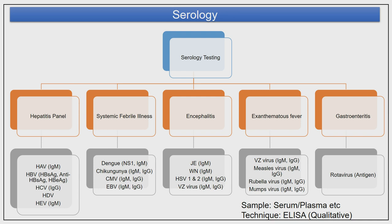For serological testing under the syndromic approach: the hepatitis panel includes HAV IgG, Hepatitis B, and Hepatitis C by ELISA, which we perform regularly. For systemic febrile illness, we test dengue NS1, IgM and IgG, chikungunya, cytomegalovirus, and EBV. The encephalitis panel includes Japanese Encephalitis IgM, West Nile fever IgM, HSV-1, HSV-2, and Varicella Zoster IgM and IgG. For exanthematous fever: Varicella Zoster, measles, mumps, and rubella — both IgM and IgG available. For gastroenteritis: rotavirus antigen detection. All these use serum or plasma and are qualitative ELISA testing.